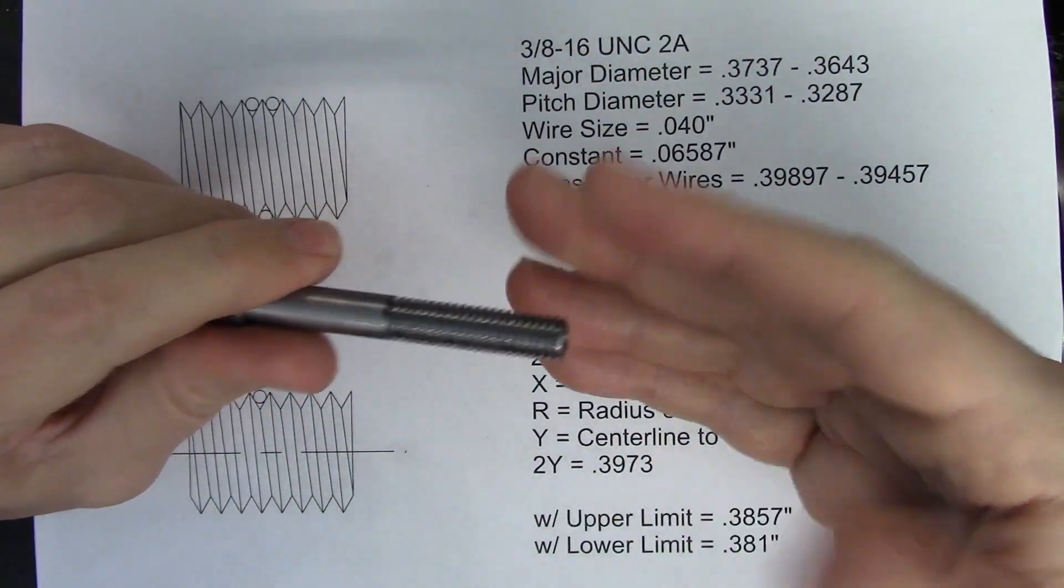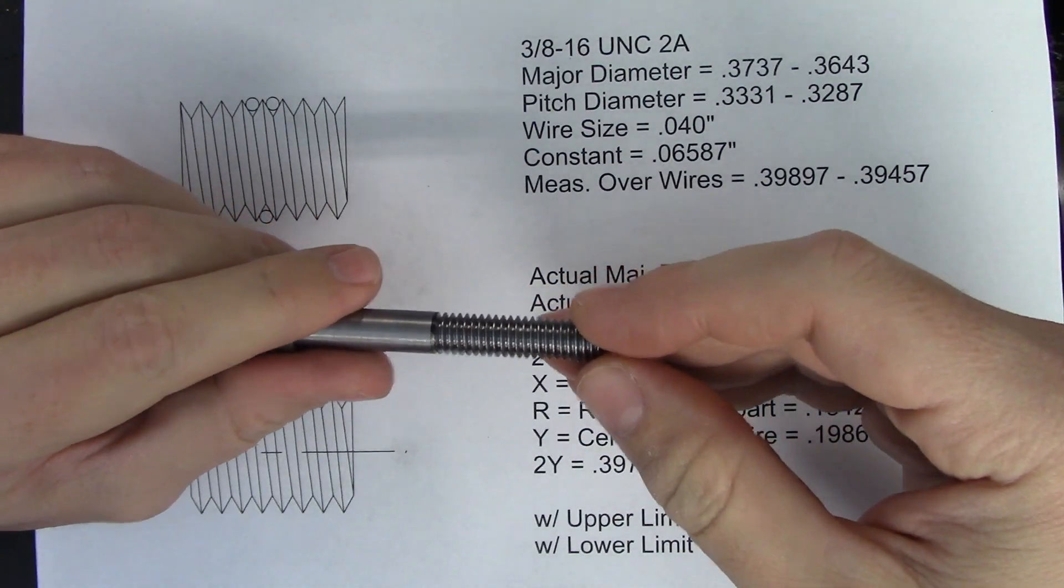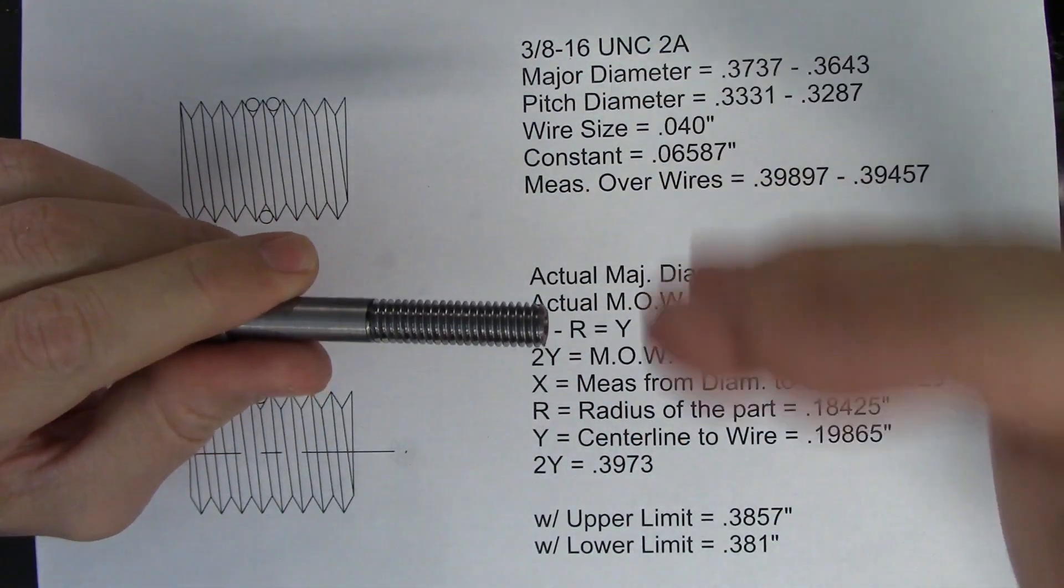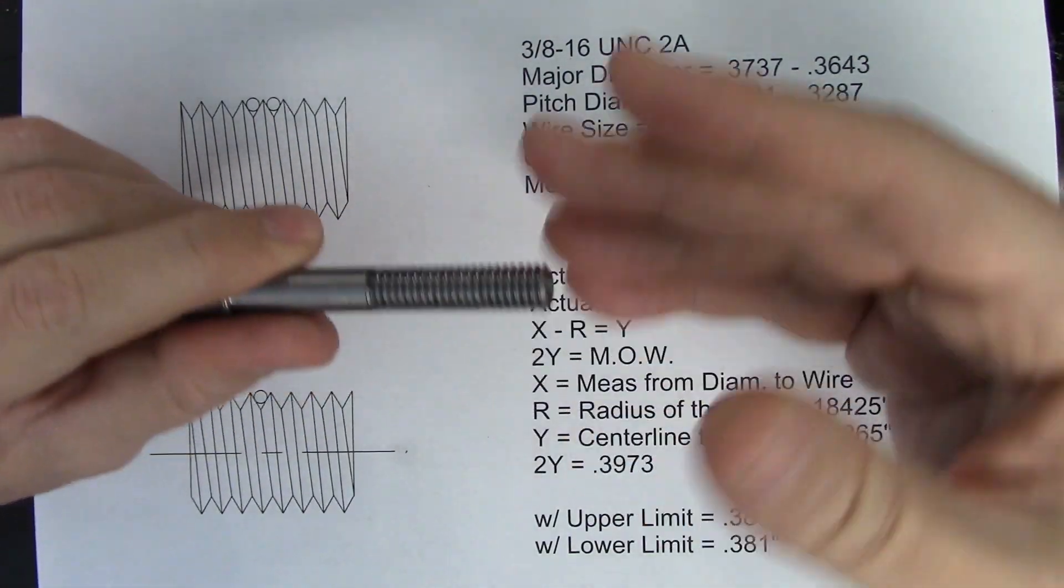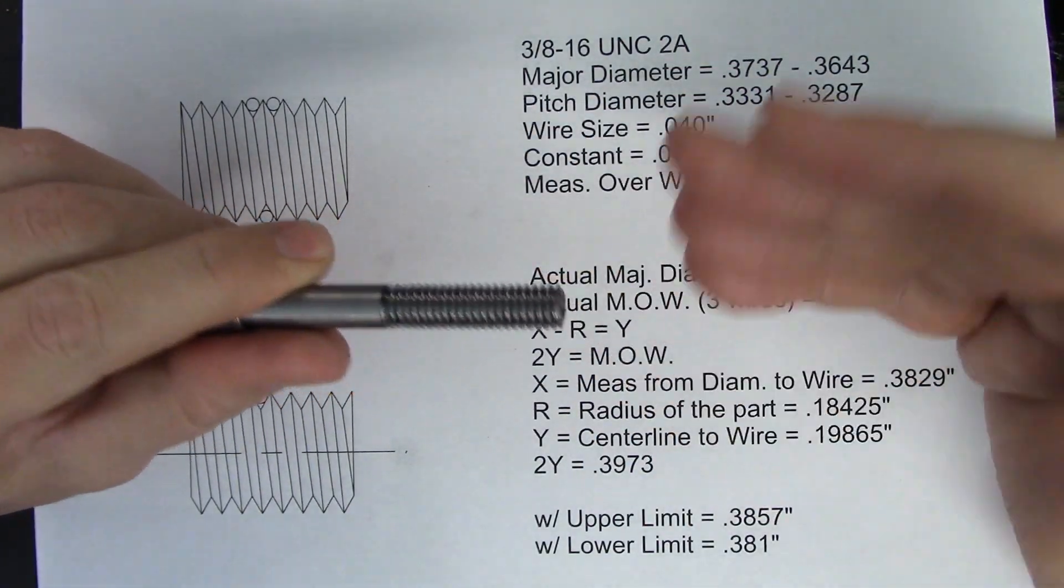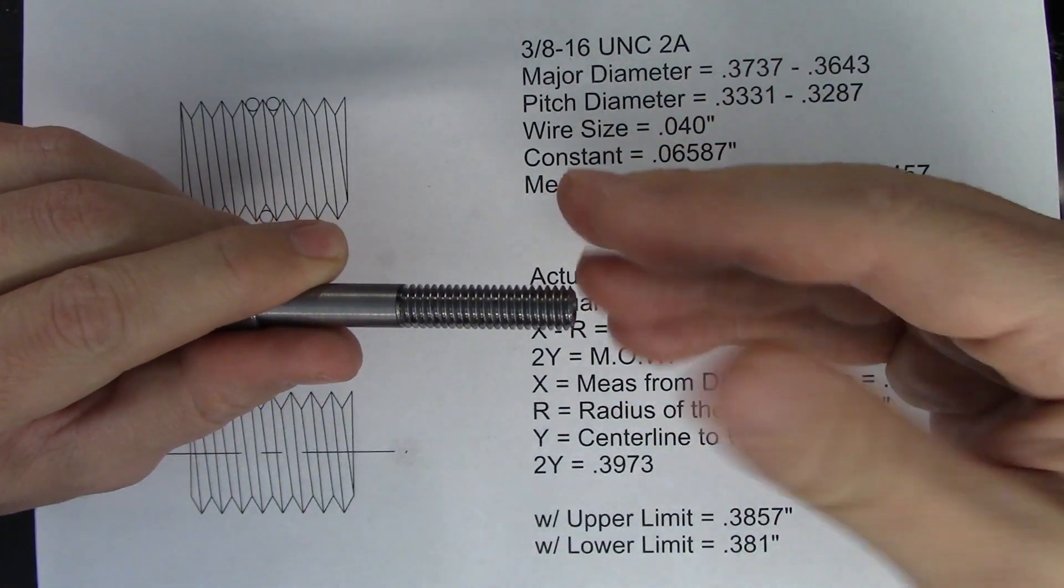Does this actually matter? Well, it certainly could. If your pitch diameter is at one of the extremes, this seemingly insignificant difference could result in you passing a thread that's out of tolerance, or scrapping a thread that's actually within specifications.